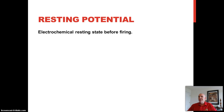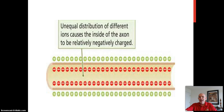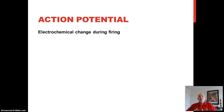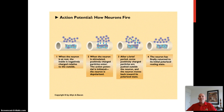The resting potential is the electrochemical state before firing. There's more negative ions inside, resulting in a slightly negative charge of a few millivolts. When a neuron becomes excited, it allows positive ions to flow into the cell membrane and it becomes positively charged. This happens in one-thousandth of a second, and it's called the action potential. The action potential is the electrochemical change during firing. Positive ions flow out quickly, and the resting potential state is restored in one-thousandth of a second.